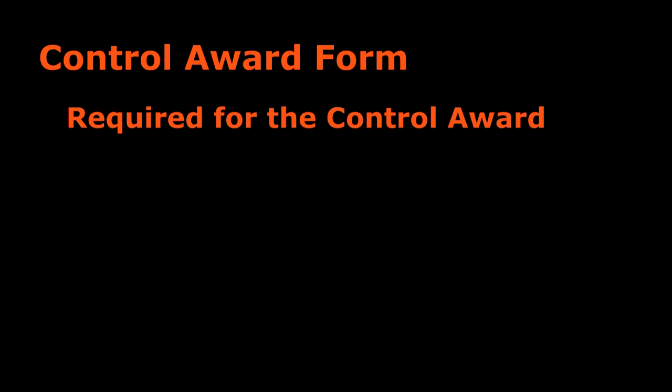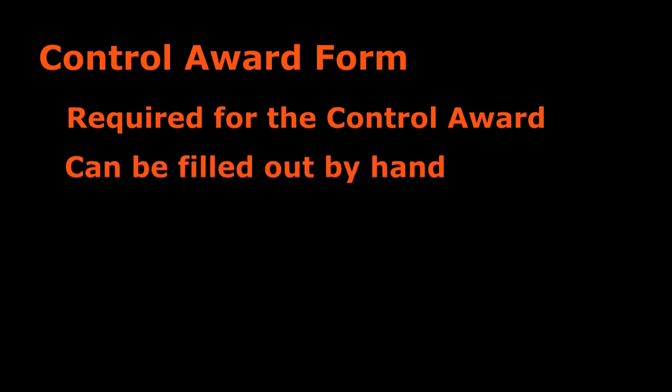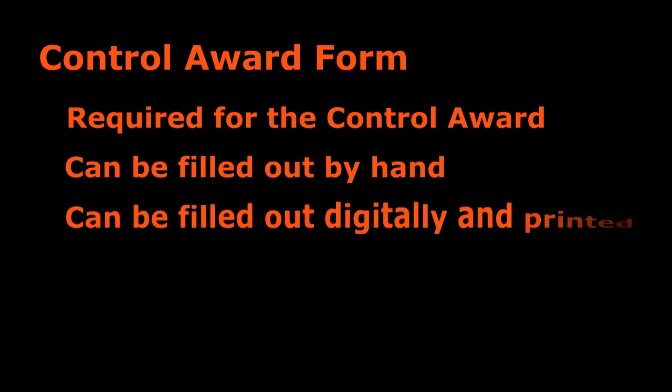Now, we are going to talk about the control award form. If you want to be considered for the control award, you need to find the control award form for the current season and fill it out. You can either print out the form and write in the information by hand, or find a digital copy, fill that out, and then print it. Some teams put the form into a Google Docs and share it with other teams, so if you would rather type it, you just need to find an editable form.